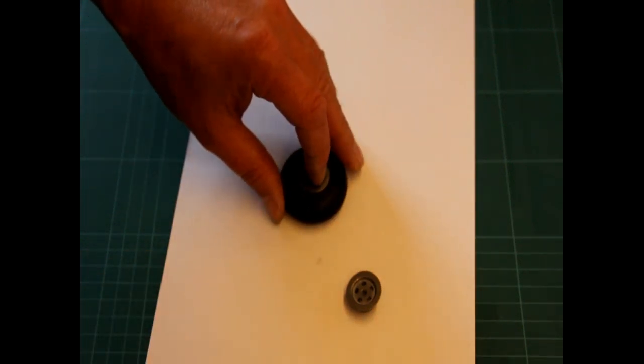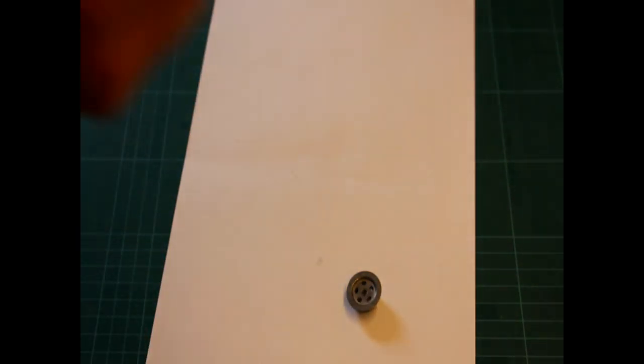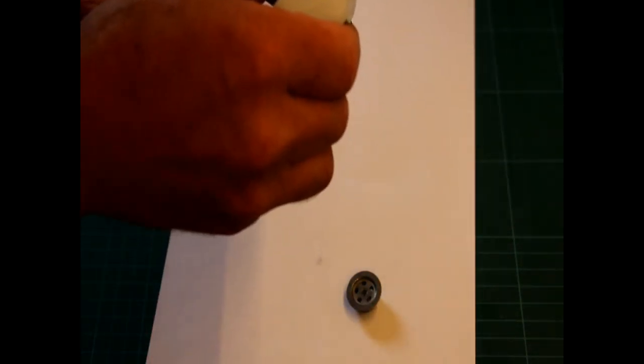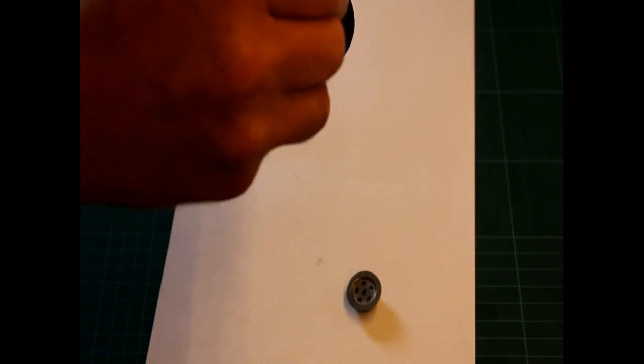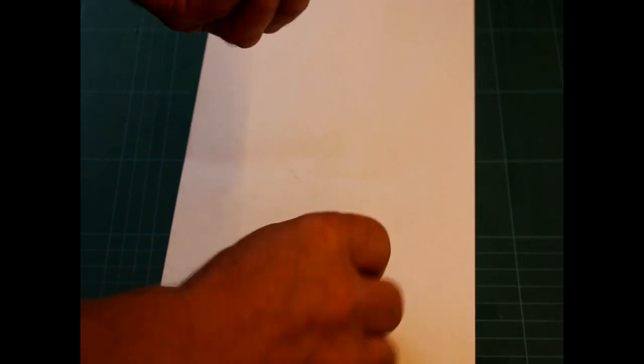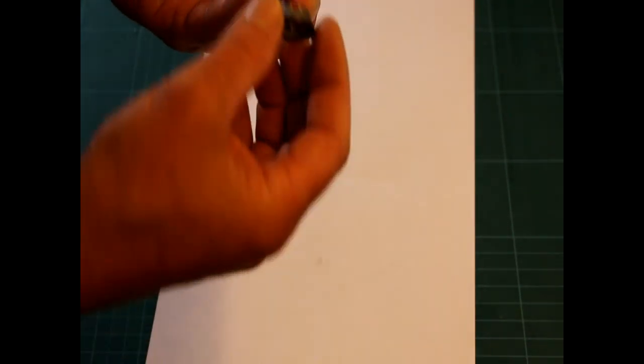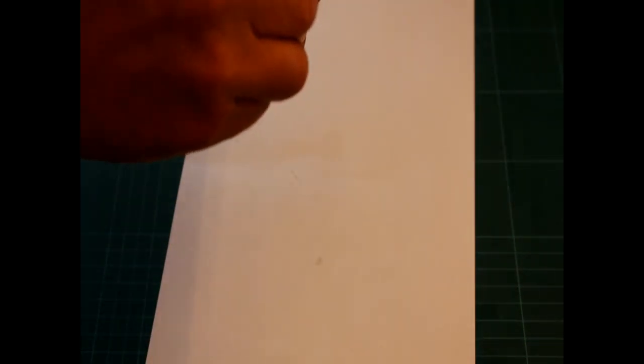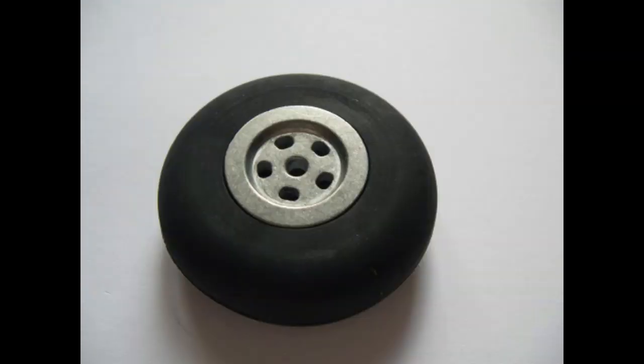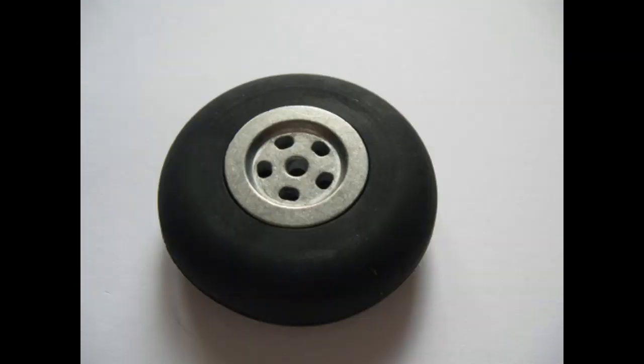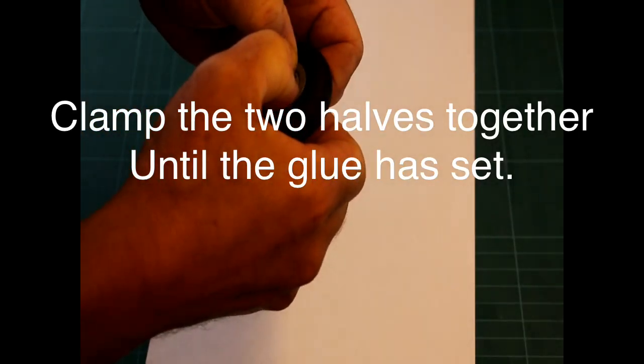Once again you can use epoxy, I'm using the CA. Apply a couple of drops around the inside of the rim and then with the other half push that together and then hold them together until the glue has set.